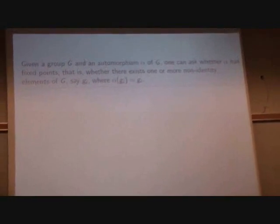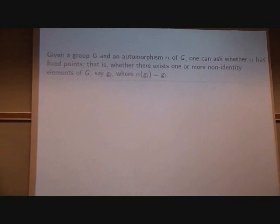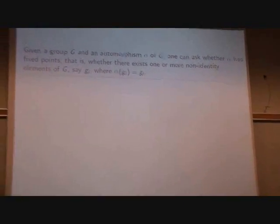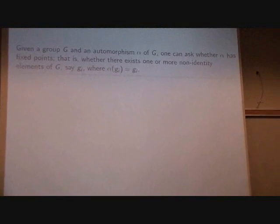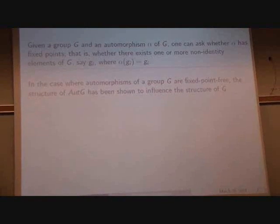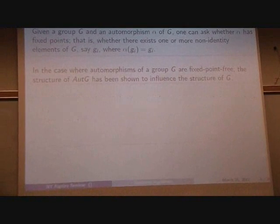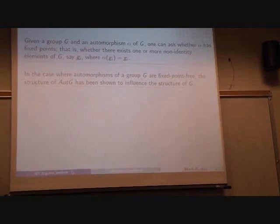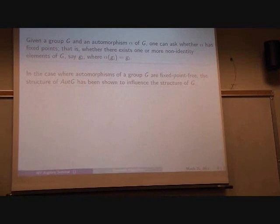We have some further motivation. Again, we're concerned with these fixed points of automorphisms. If we have a group and we have an automorphism of a group, we can ask whether that automorphism has fixed points. Namely, whether there exists some G sub i in a group such that alpha of G sub i is G sub i. In certain circumstances, the structure of the automorphism group has been shown to influence the structure of the group itself. Now I'm talking again in the finite case.